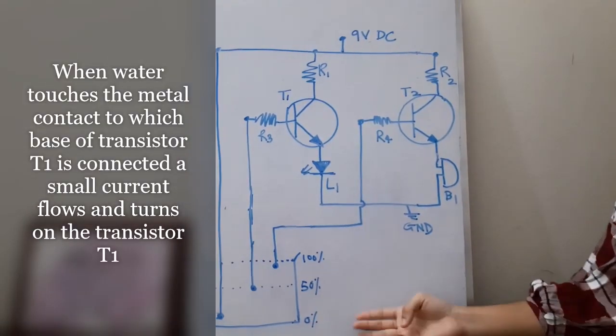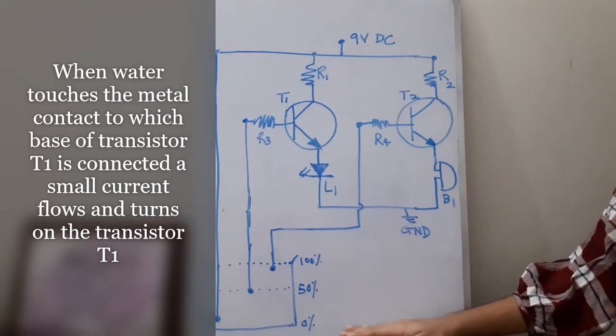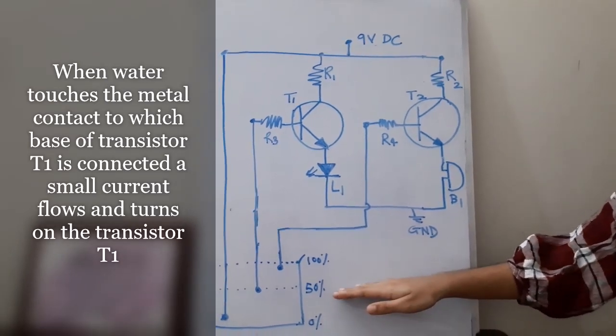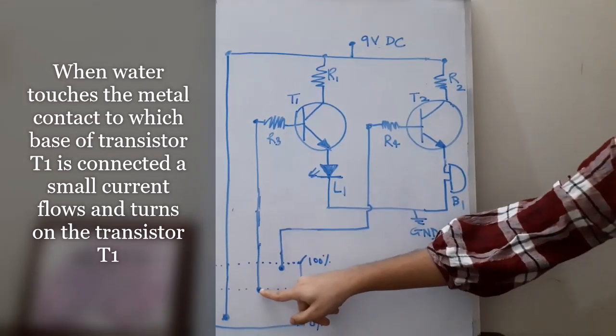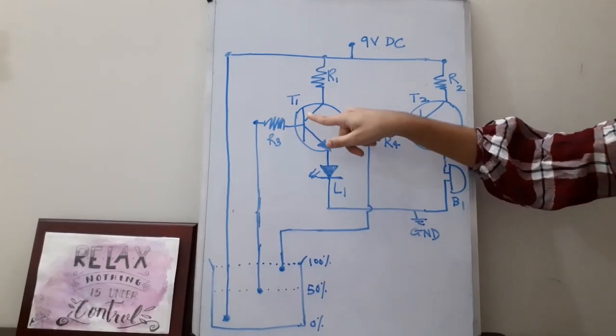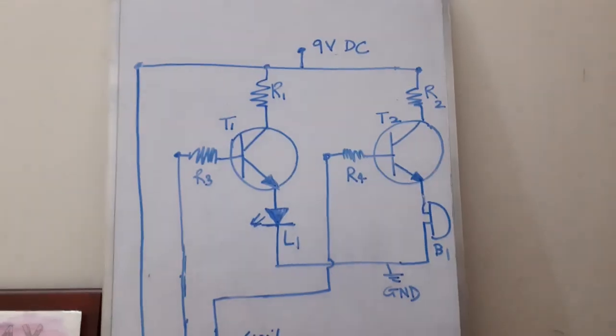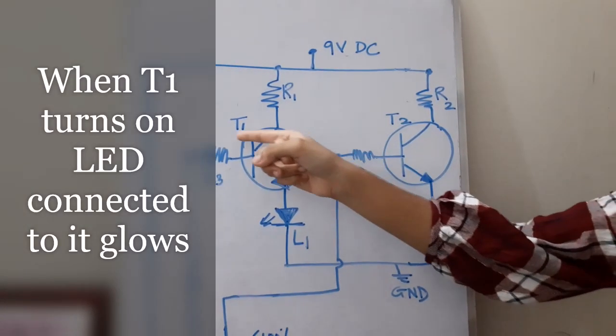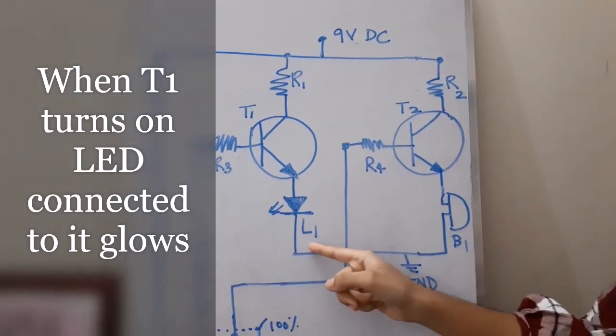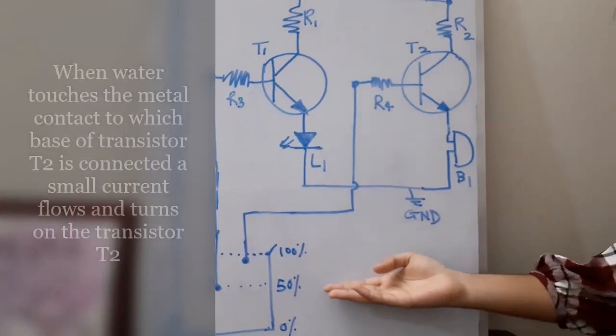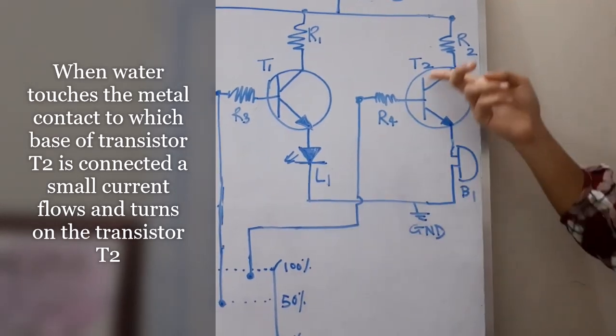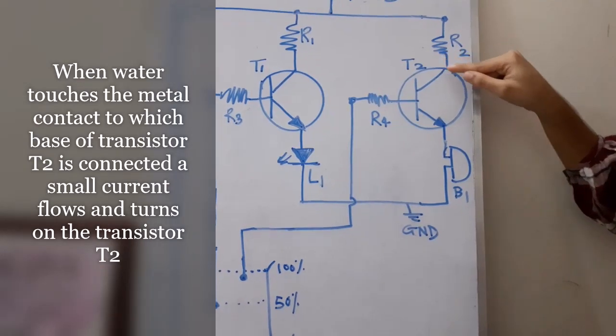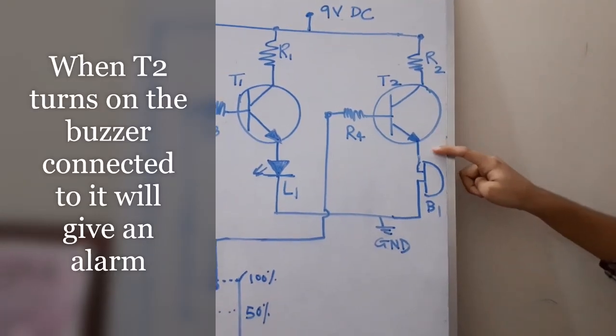Initially there will be no water in the tank. When the water slowly rises and reaches the 50 percent level, it comes in contact with the lead of the base of the transistor T1. This makes the transistor T1 conduct and glow the LED. Slowly the water level rises from 50 percent to 100 percent and the transistor T2 conducts to switch on the buzzer. Let's do the connections.